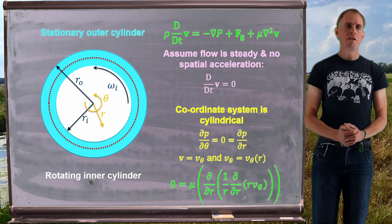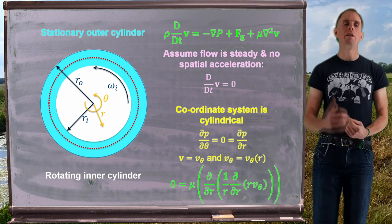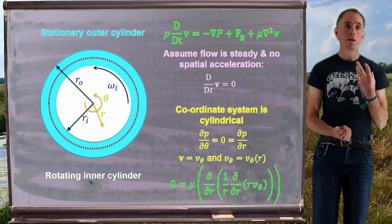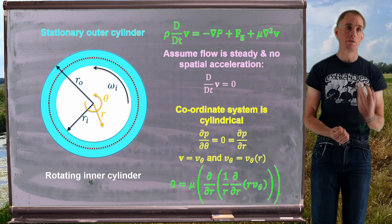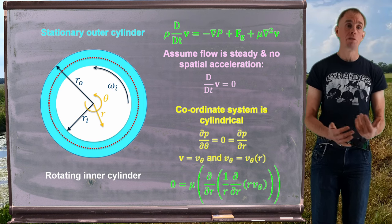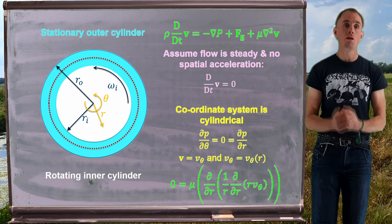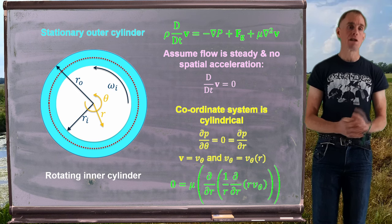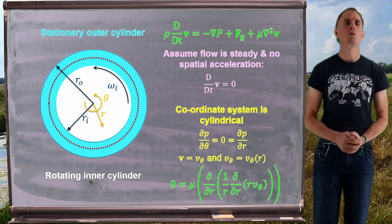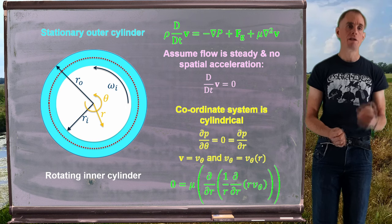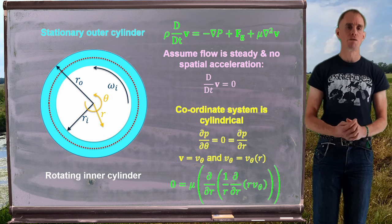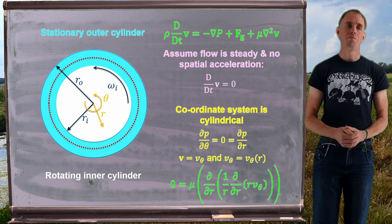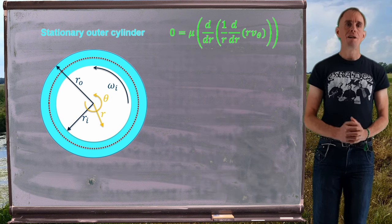Having identified our key velocity direction and made assumptions about pressure gradients, we drop the Navier-Stokes equations in vector form into our coordinate system. The left-hand side is zero because we've ignored the substantive derivative. The grad p term is zero since we've justified ignoring pressure gradients. Gravity body forces are zero. All that remains is the non-zero term of the Laplacian. Looking at the theta direction velocity varying with r, the only non-zero term is mu times d/dr of (1/r) times d/dr of (r v_theta).